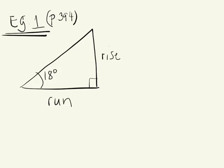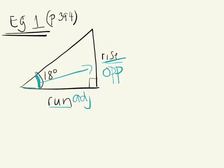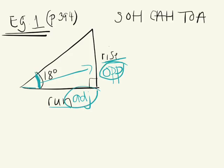We're given an angle of 18 degrees, so we're referring to this angle. How would I label the two sides of the triangle? In relation to this angle, this side is opposite and this side would be adjacent because it's touching the angle. So we're working with opposite and adjacent. Which ratio uses the opposite and the adjacent side lengths? This one has opposite and hypotenuse, adjacent and hypotenuse, opposite and adjacent — so we're looking at the tangent ratio. I don't need to use sine or cosine because I don't need to know about the hypotenuse right now.